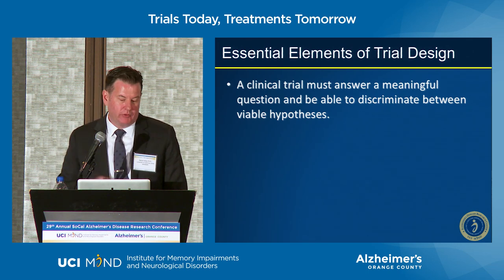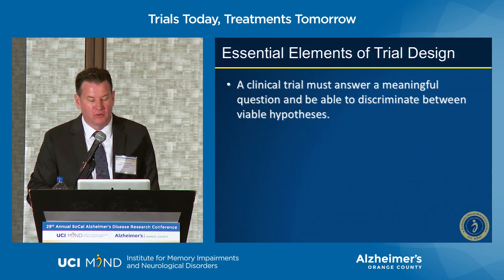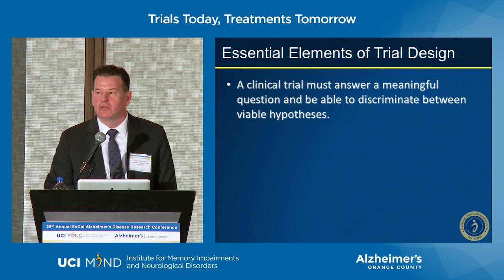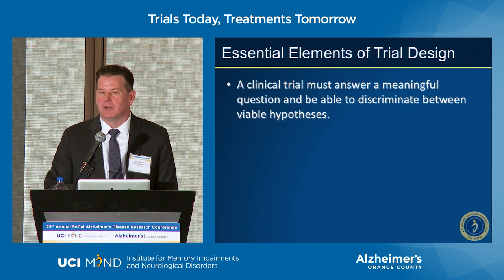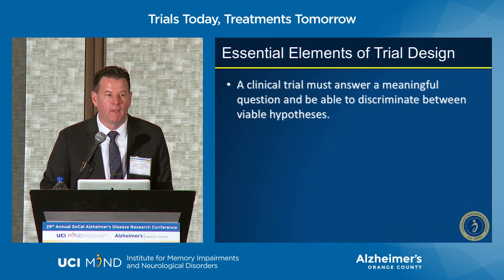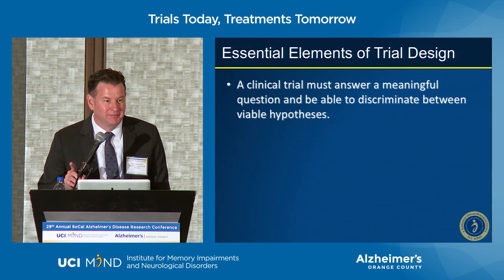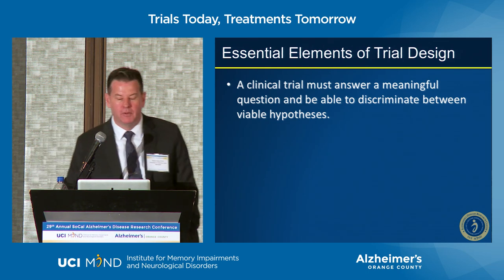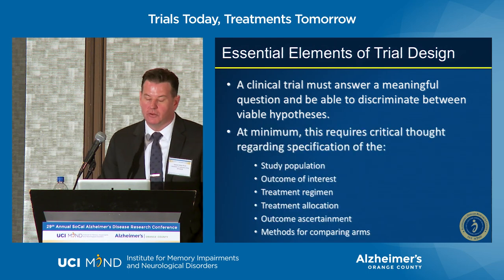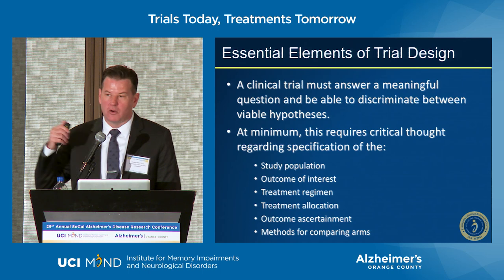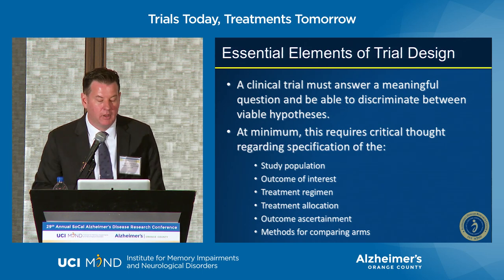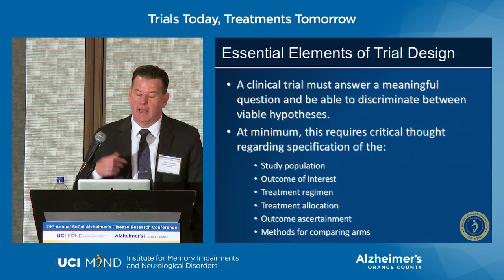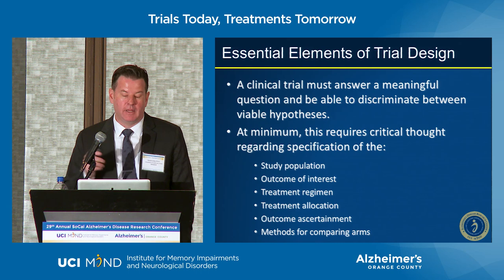What are the essential clinical trial design elements? First, a clinical trial must answer a question — it has to discriminate between viable hypotheses. A 'failed clinical trial' is one that is not designed properly. It doesn't mean the treatment didn't work; a failed trial is one designed improperly so we don't have an answer as to whether the treatment works. That requires careful specification of the study population, outcomes of interest, treatment regimen, dosing, dose reductions, allocation of individuals, ascertainment of outcomes, and comparison between arms.